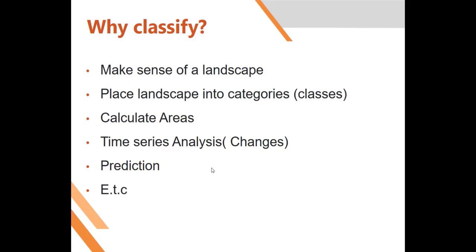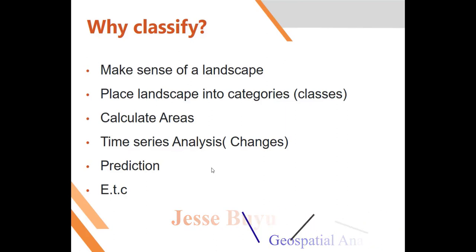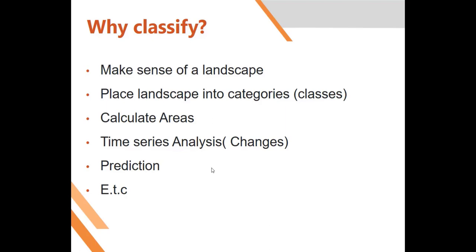— you first have to classify the image. After classifying the image you can determine the vegetation coverage in acres, the water in acres, the built-up area in acres. You can do that over a given period of time and identify and quantify the changes that have occurred, and then from that you can predict what will happen in the future based on what you have studied in the past.